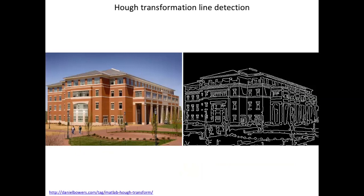Hough transformation has many applications beyond EBSD. For example, applied to a photograph of a building with many straight lines, Hough transformation identifies all lines as points in the Hough map, and back-plotting from those points gives a clean abstract image. For your projects, if you need to quickly find many lines in a micrograph, Hough transformation is one useful approach.